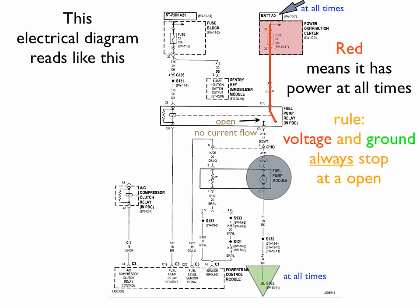Now on the ground side, it has ground all the time, because it says G105. That means it is a body ground source. We're going to color that green, because green means it has ground at all times. It's not turned on. If that is bolted down to the frame, it has ground. Now that confirms our rule that voltage and ground always stop at an open.